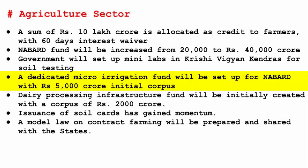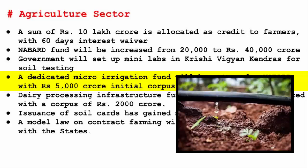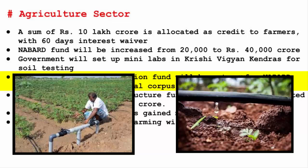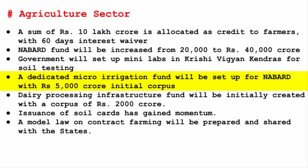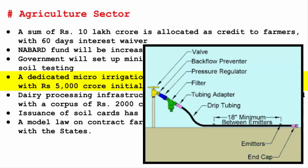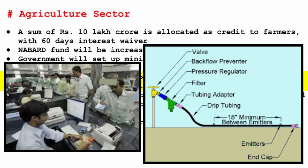A dedicated micro-irrigation fund will be set up under NABARD with an initial corpus of Rs. 5,000 crore. The micro-irrigation or drip irrigation industry saves water and fertilizer by allowing water to drip slowly to the roots of plants through a network of pipes, valves, and tubes. Since this industry already works towards efficiency, farmers expect timely and simplified implementation of subsidy schemes. Both the centre and states give subsidies of 50-100%, but farmers are unhappy with implementation — particularly the requirement to install the system first and then apply for the subsidy, leading to long delays that adversely affect their finances.